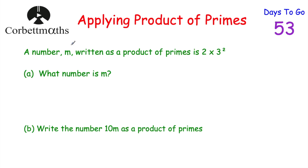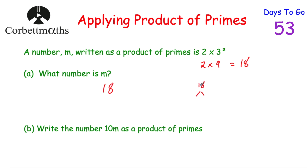Another question: a number m, written as a product of prime numbers, is 2 × 3². We're asked what m is. Remember our order of operations — do the squaring first: 3² = 9. So we've got 2 × 9 = 18. So m = 18. We can check: start with 18, that's 2 × 9, circle the 2, then 9 is 3 × 3, circle both. We get 2 × 3 × 3 = 2 × 3², confirming m = 18.